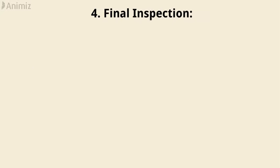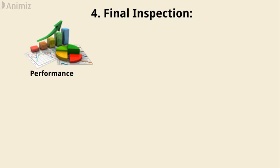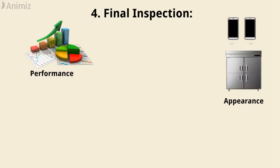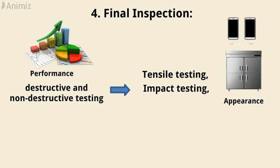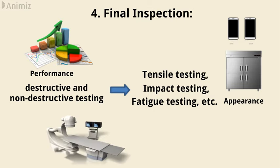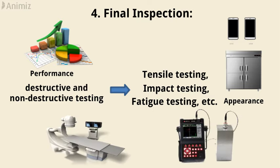Final inspection: In the final inspection, the inspector checks the performance and appearance of the product before delivery. These types of checking include destructive and non-destructive testing such as tensile testing, impact testing, fatigue testing, etc. The final stage of inspection ensures that the product passes x-ray radiography, ultrasonic inspection, etc.